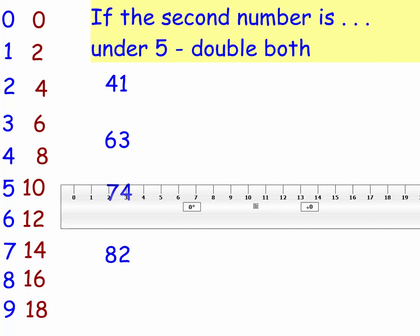Let's try it then. Two-digit numbers. If the second number is under 5, it's really easy. We just double both digits. So I'm going to double the 4, which remember represents 10s, so that's 8 10s. And then I'm going to double the 1, which gives me 2 units, 82.